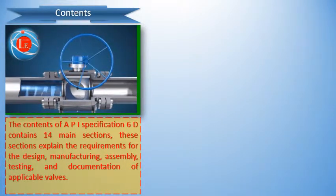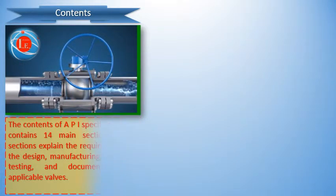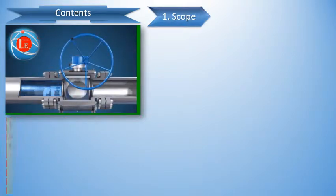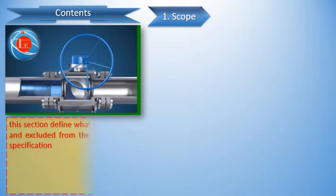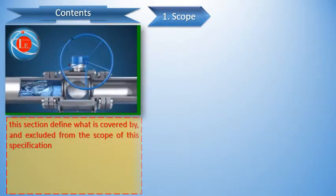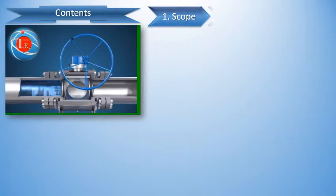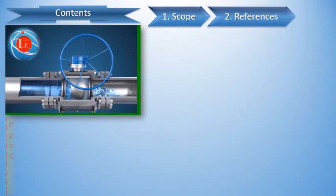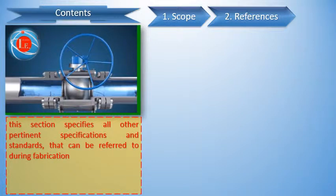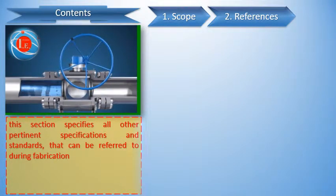You should familiarize yourself with the 14 main sections. Section 1 Scope defines what is covered by, and excluded from, the scope of this specification. Section 2 Normative References specifies all other pertinent specifications and standards that can be referred to during fabrication.